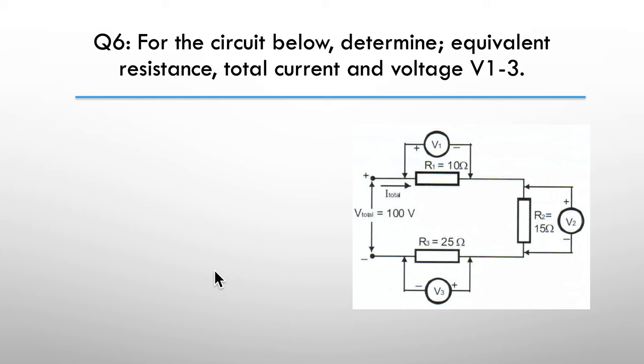Question six for the circuit below determine the equivalent resistance, total current and the voltage V1 through to V3. So pause here. The hint is, again, use your ohms law wheel.